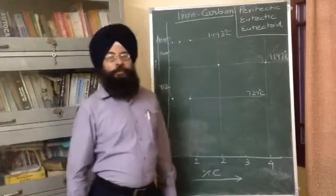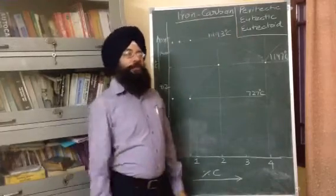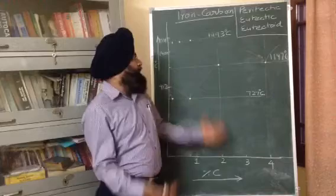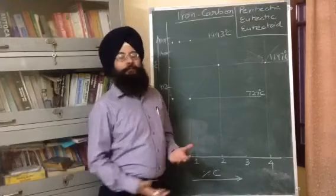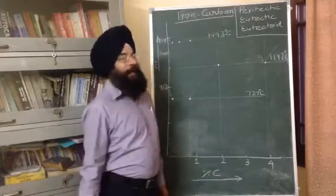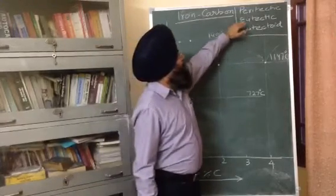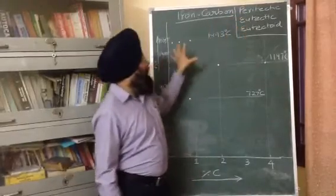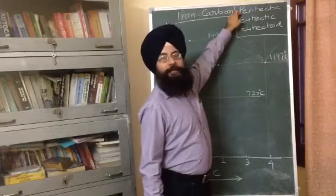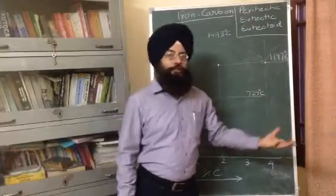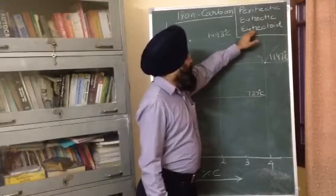Hello friends. In this video I will discuss the construction of the iron-carbon diagram. I'm not going into the details of all the phases present, but just how to construct it — what is the easy way. To start, we all know there are three very important reactions that occur in the iron-carbon diagram: the eutectoid reaction, the eutectic reaction, and the peritectic reaction. I will cover these reactions in detail in one of my coming videos.